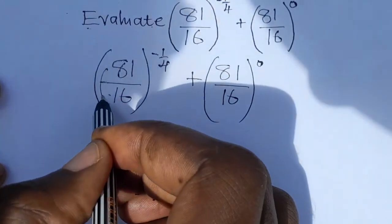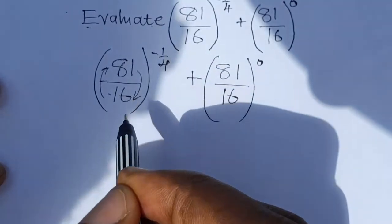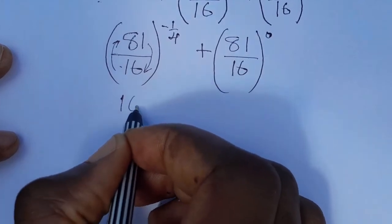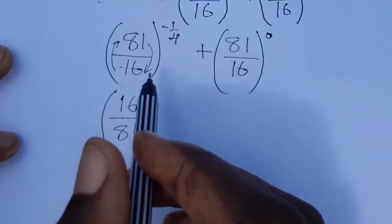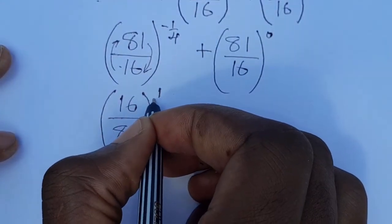So we are going to have 16 over 81. Then because we've swapped the numerator and the denominator it means the power is now positive.